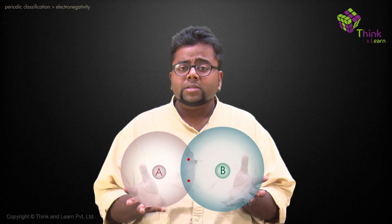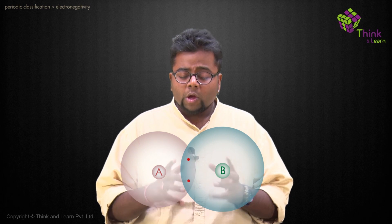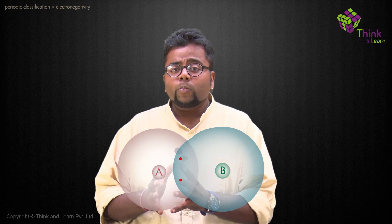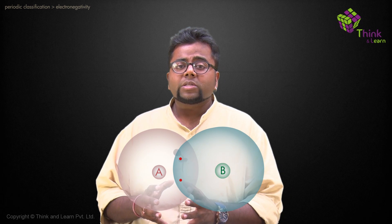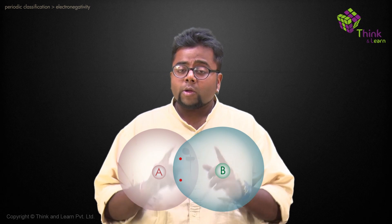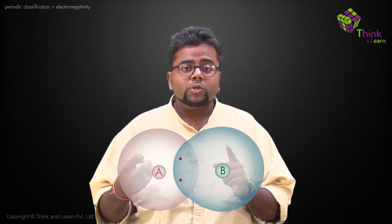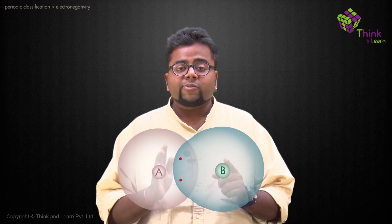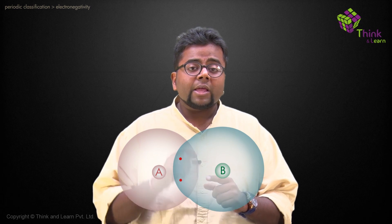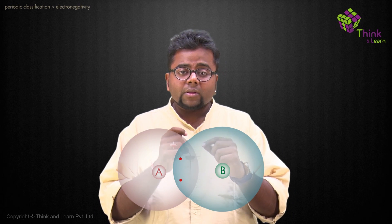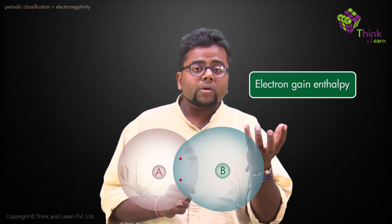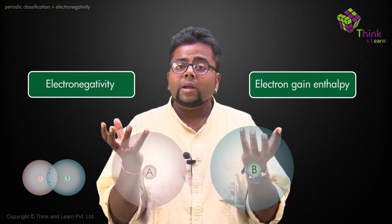If I have a covalently bonded compound, the one which has a higher electronegativity would tend to pull the shared pair of electrons towards itself. It will not absorb the electrons totally — it would just shift the electrons towards itself. That is the basic difference between electron gain enthalpy and electronegativity.